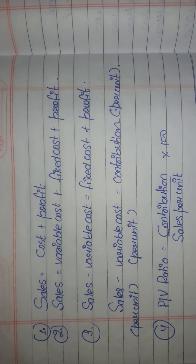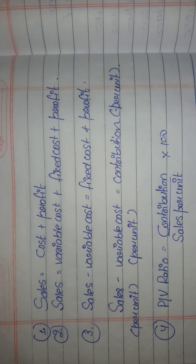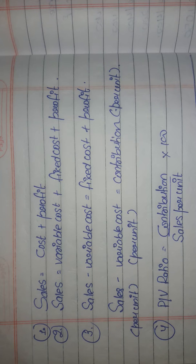Today we'll talk about marginal costing and break-even point analysis. First, what is marginal costing? We can understand it from two aspects: from an economic point of view, it is the cost incurred in producing an additional unit. From an accounting point of view, it means total cost other than fixed cost — that is your marginal cost.